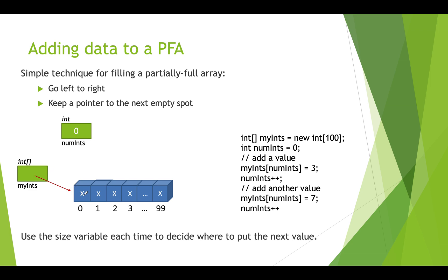To add a value, we write: myInts[numInts] = 3, using our counter as the index since it also points to the next empty slot. Then we increment numInts. Now numInts is 1 — we've got one data value in our array and it points to the next empty slot. We then do myInts[numInts] = 7 and increment numInts again. That's the simple way to add data.